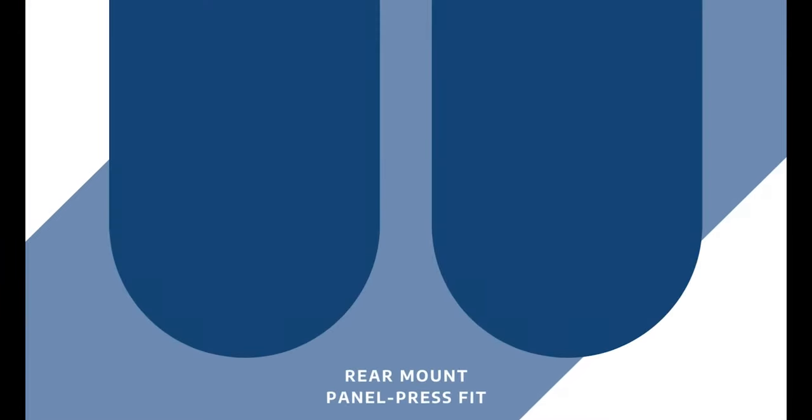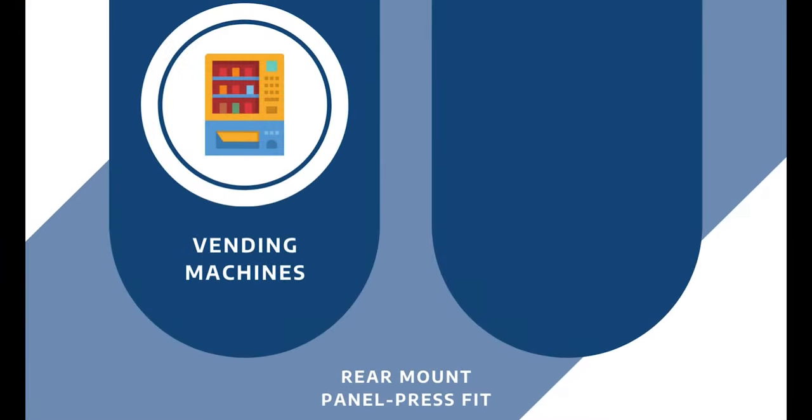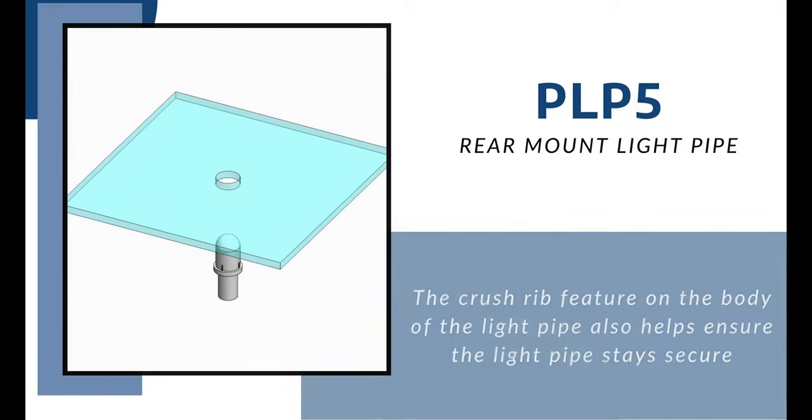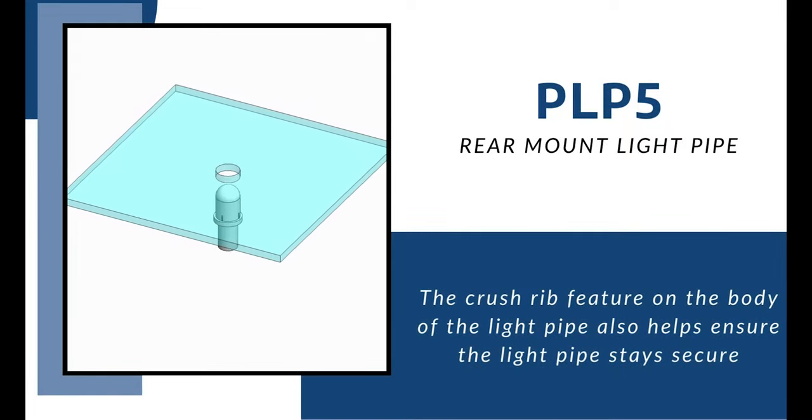A rear mount panel press fit is best used for industrial vending machines or gas detection monitors. The crush rib feature on the body of the light pipe helps ensure the light pipe stays secure.